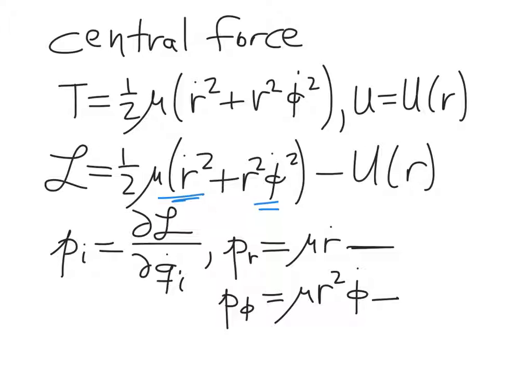So these are our new generalized momenta. And so now we're going to use these to rewrite our Lagrangian and then write our Hamiltonian. So the first thing we need to do is replace our q_i dots. And so r dot is going to be, of course, p_r over mu. And phi dot, that's going to be equal to p_phi over mu r squared.